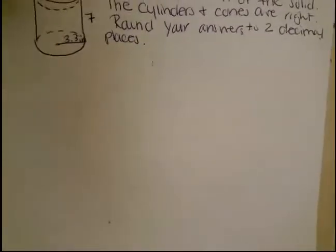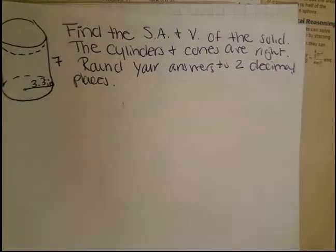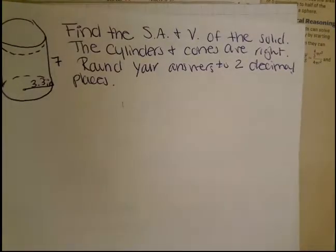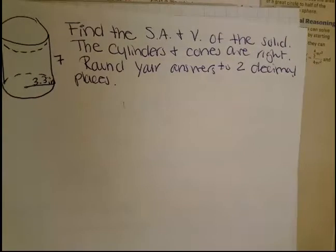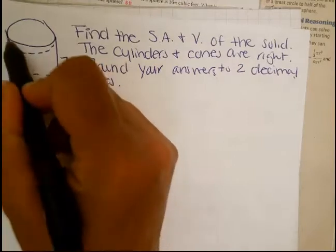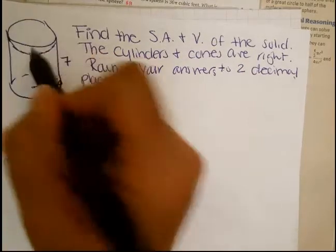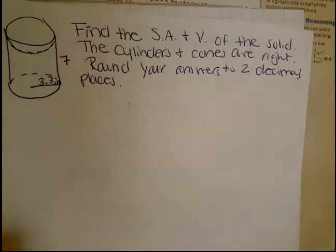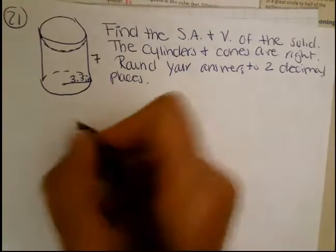Number 21. Find the surface area and the volume of the solid. The cylinders and cones are right. Round your answers to two decimal places. Basically, we have a cylinder, and then we have a hemisphere. We have a hemisphere like dome, kind of like concave on the top.